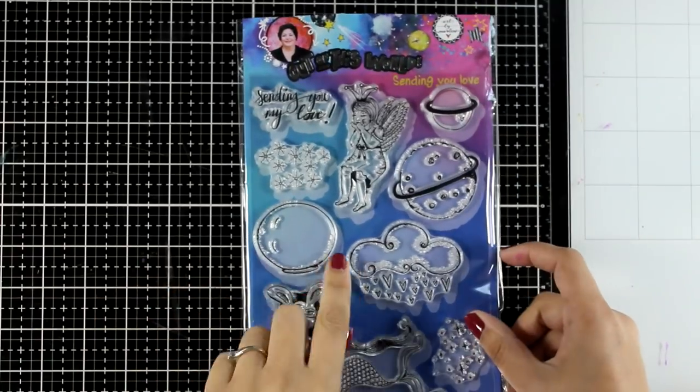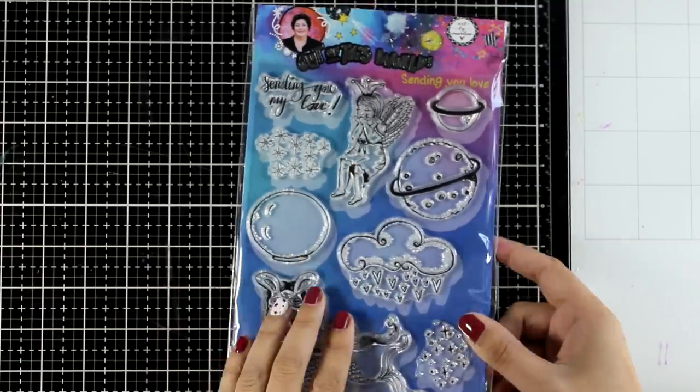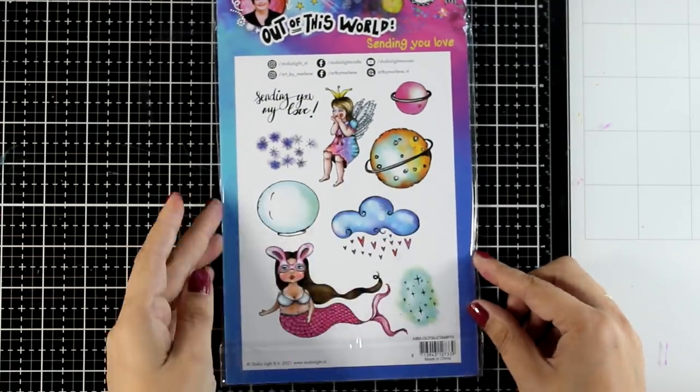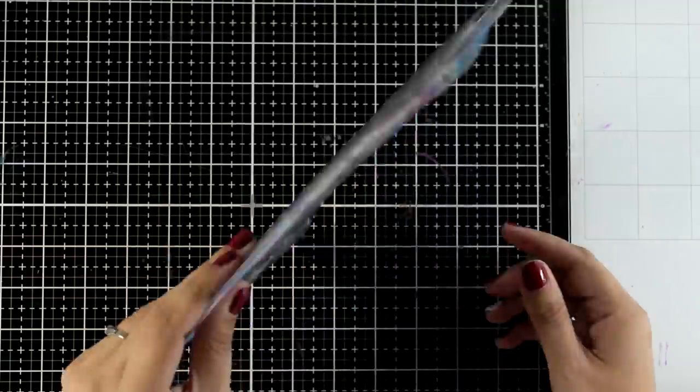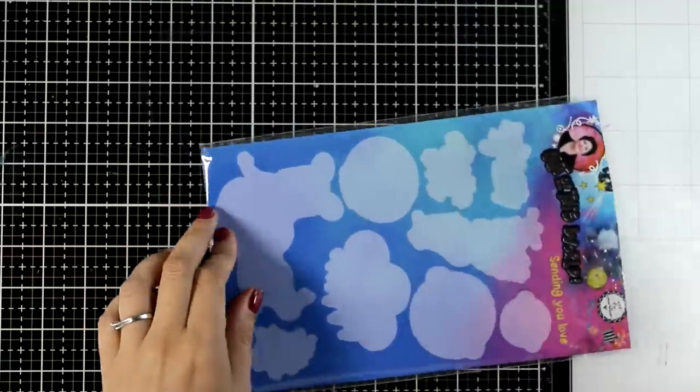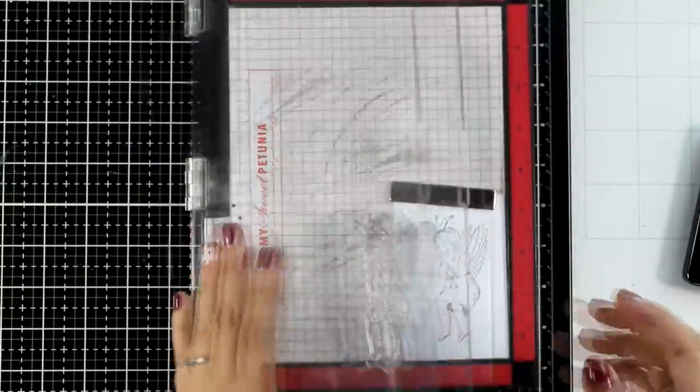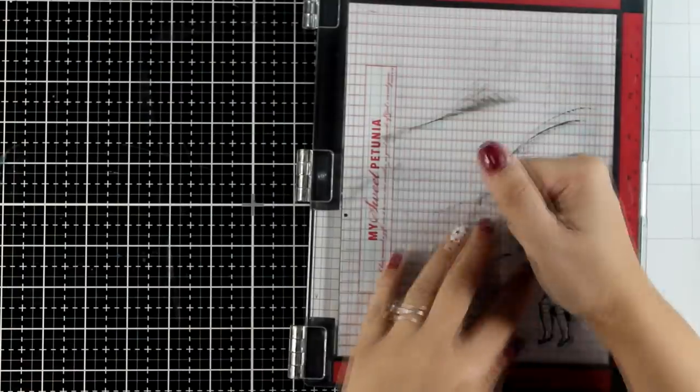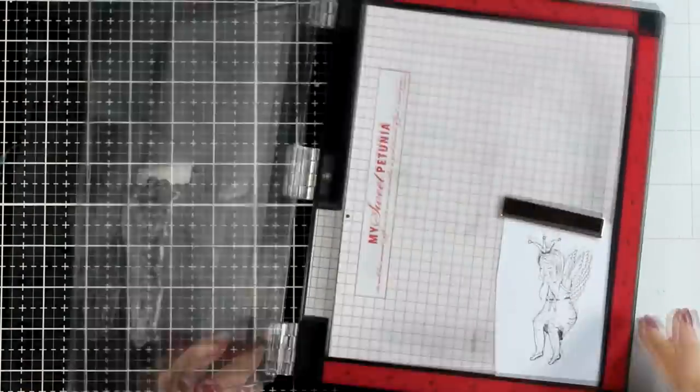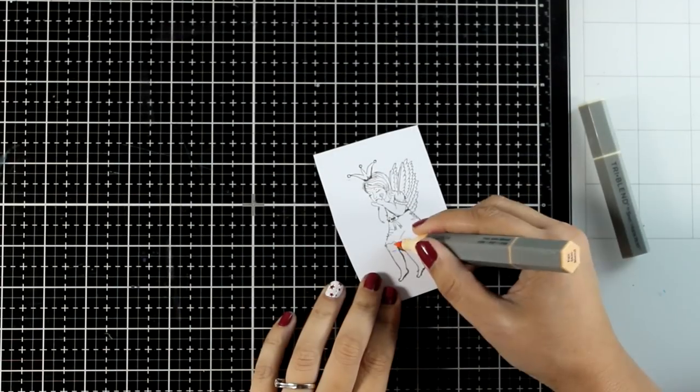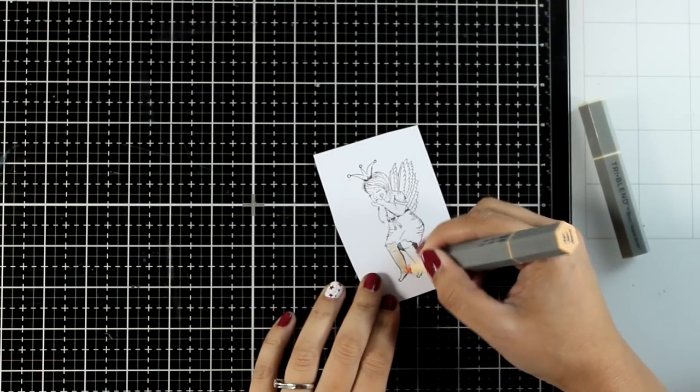For my focal point I decided to go with this adorable girl. Now she is from the Sending You Love stamp set. In the same stamp set you will find a mermaid, maybe a space mermaid I don't know. You will also find clouds and planets. So you can combine her with the elements that are already in the stamp set if you don't want to get the moon. I am using alcohol friendly ink to stamp her since I am planning to use my alcohol markers. But you can go ahead and color it with watercolors, with pencils, with alcohol markers, or even with acrylic paint. But if you do use acrylic paint, you may go over the line, the black lines, and cover them up.